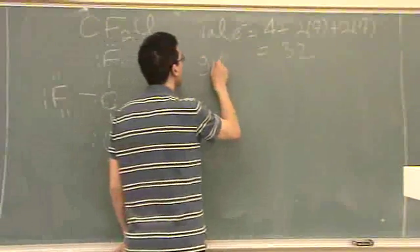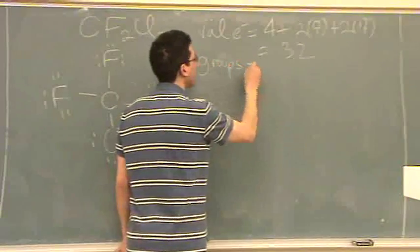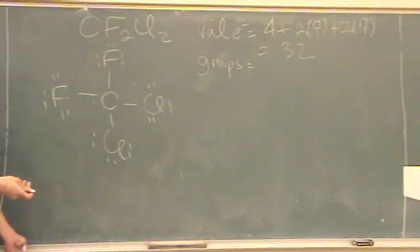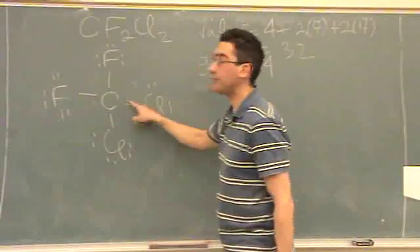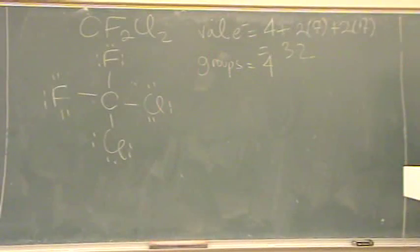So now, we go groups. We have to go to shape before we go to polarity. So many groups? Four. Four. One, two, three, four. Single bonds on the center atom.